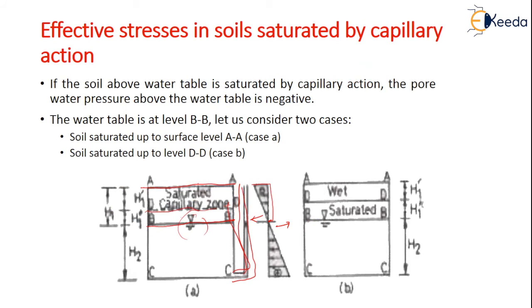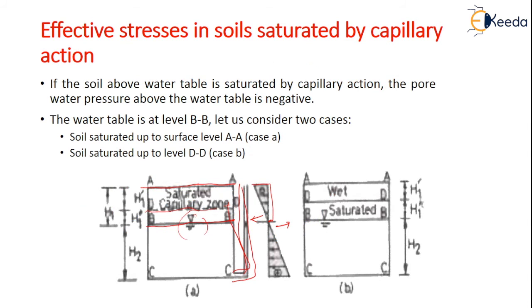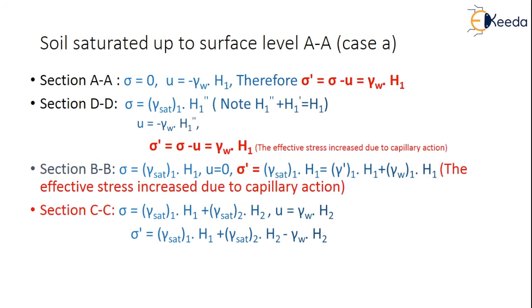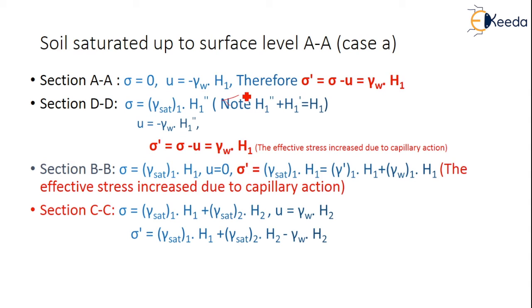Case 1 — soil saturated up to surface AA. At section AA: sigma = 0 (no load or surcharge), pore water pressure is negative due to capillary action: u = −gamma_w·h1. Therefore, effective stress sigma' = sigma − u = 0 − (−gamma_w·h1) = +gamma_w·h1. Effective stress is increased due to capillary action.